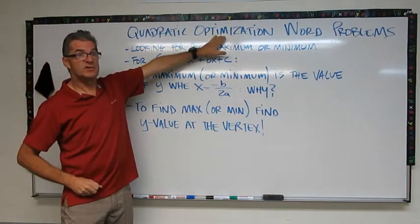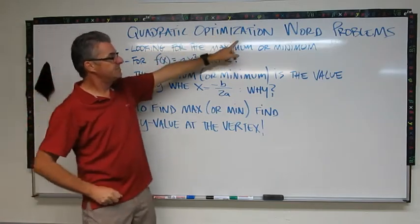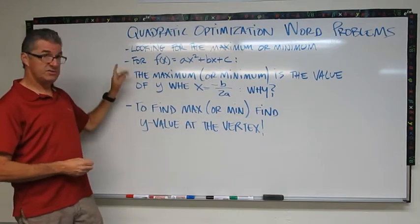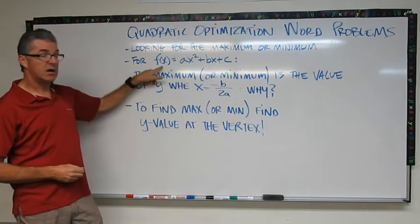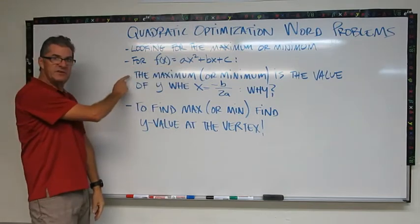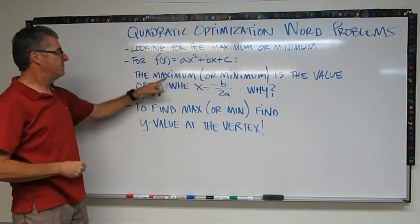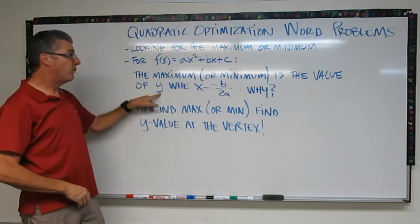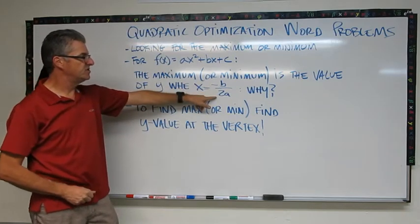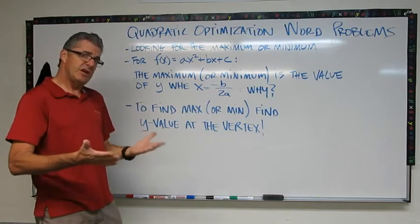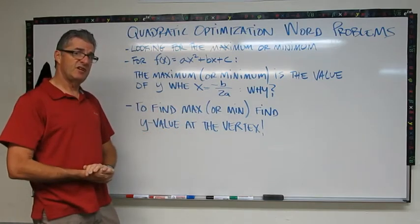Optimization refers to finding the maximum or minimum value for a given situation. To do that, we're going to consider our quadratic equation in standard form. Here's the information that you're going to need. The maximum or the minimum is the value of y when x is minus b over 2a. So I'm going to ask you that. Why is that true? Pause the video and just think about that a little bit. See if you can figure that out.